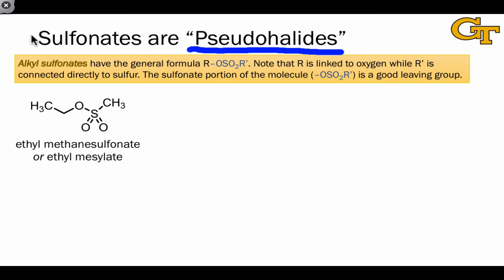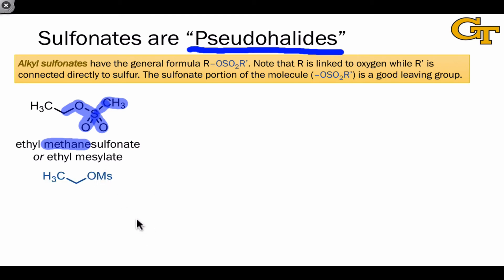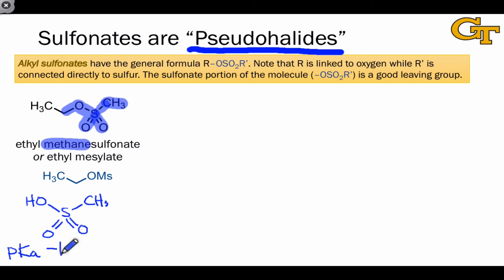Here's an example of ethyl methanesulfonate, also called ethyl mesylate. The methane piece of this name comes from the fact that sulfur is bound to a methyl group — this isn't the electrophilic carbon. The electrophilic carbon is connected to oxygen, not to sulfur, and the entire sulfonate fragment highlighted in blue is the leaving group, abbreviated MS. The pKa for mesic acid is about −1.9, below our threshold of pKa = 0 for good leaving groups.